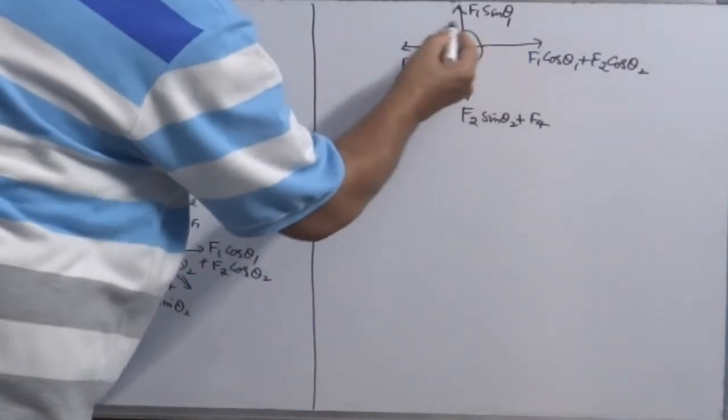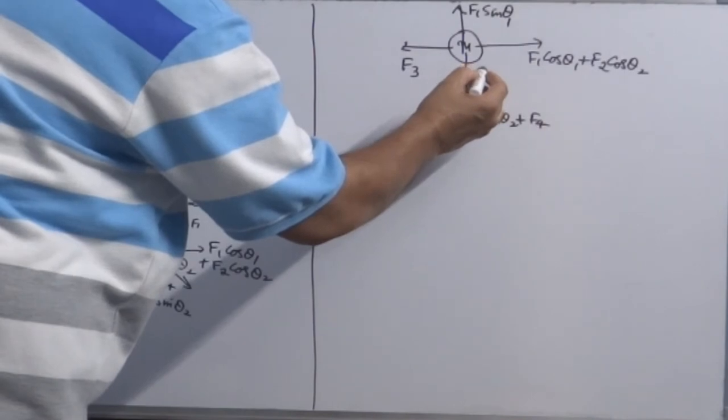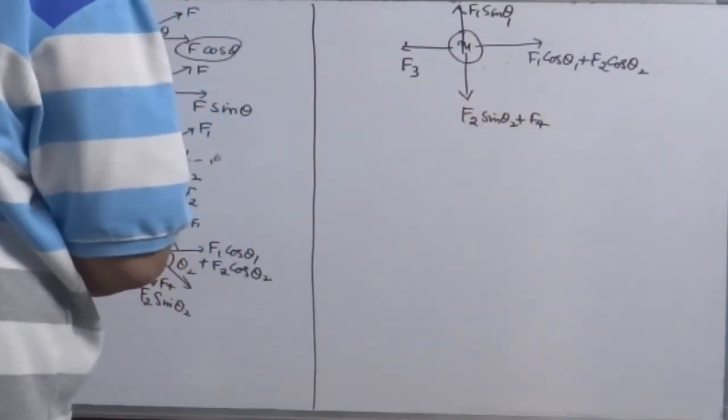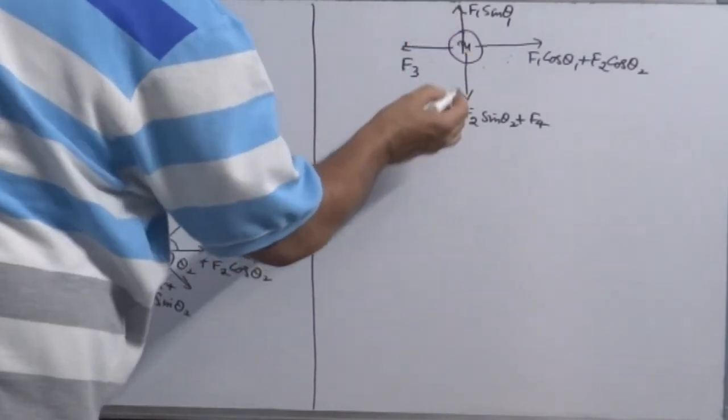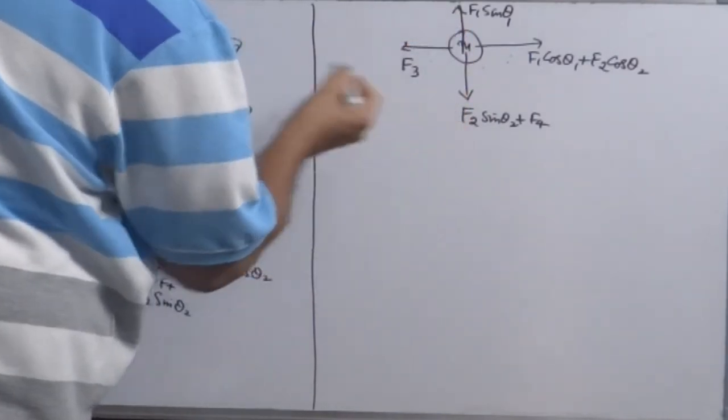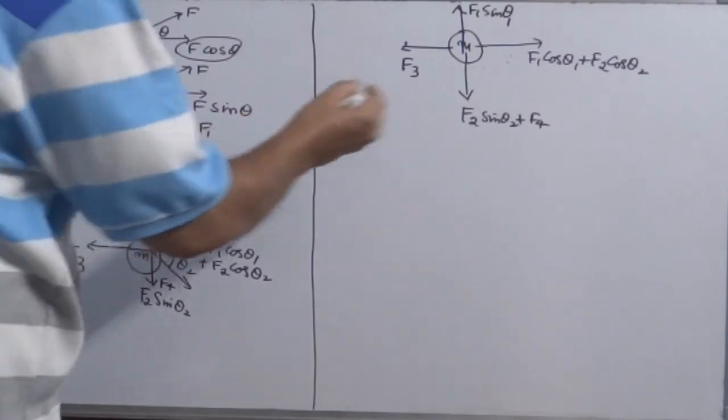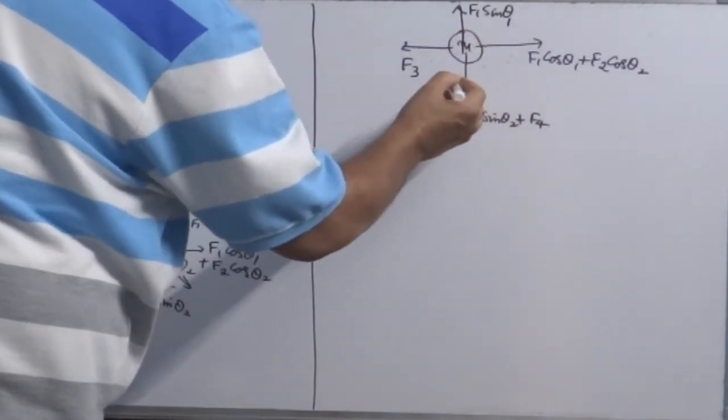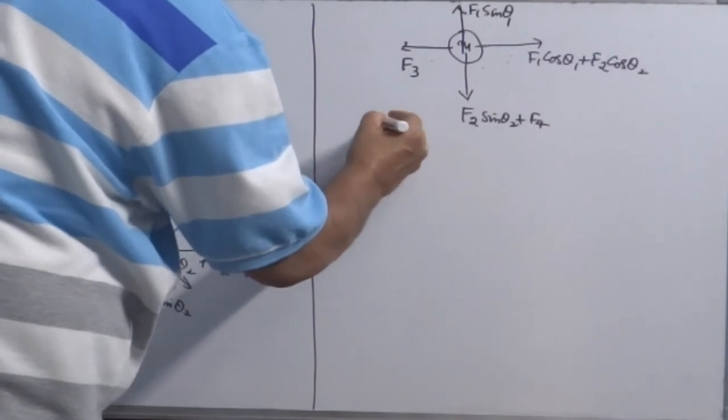So total four forces are acting. These two forces are in opposite direction, so you can find resultant by the difference of these two forces. These two forces are acting along Y and negative Y axis, so you can find resultant of this. So the four forces problem, you can resolve into two forces.